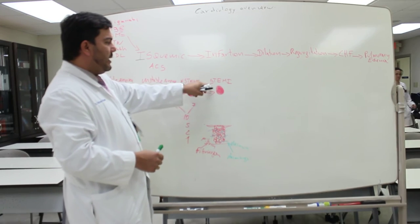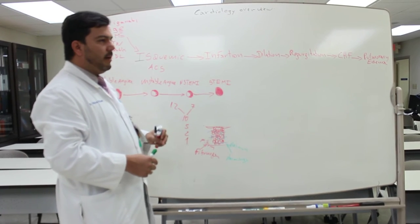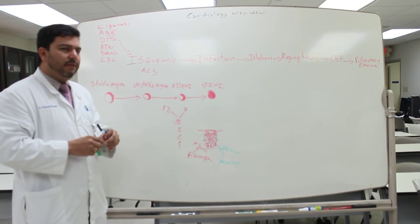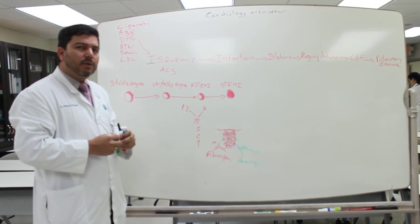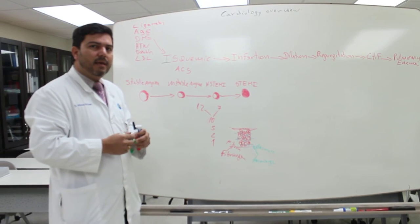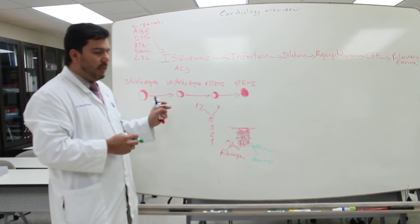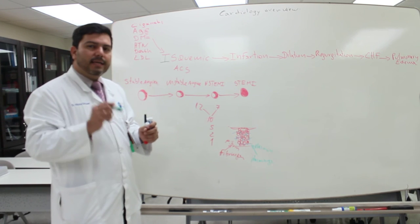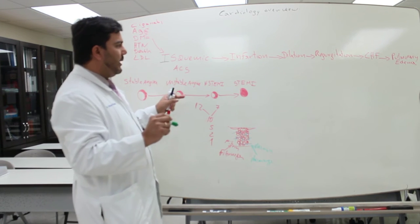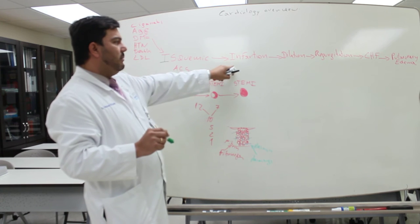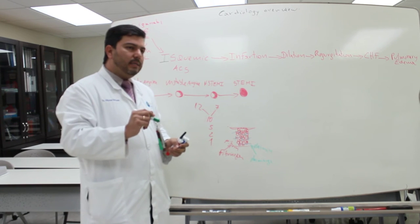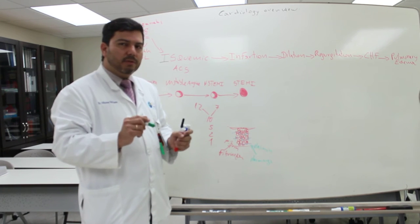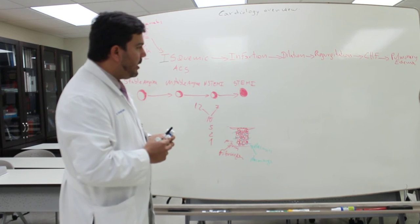Infarction is one of the things you will see in ST elevation MI. Remember, the first thing you ask when you suspect ischemia is an EKG. The EKG will give you ST depression for ischemia. But when you encounter a patient with infarction, what you're going to see is elevation of the ST segment and also elevated troponin levels.